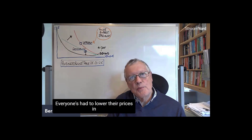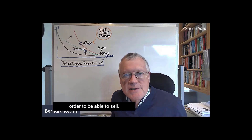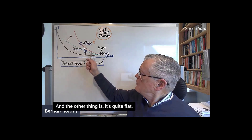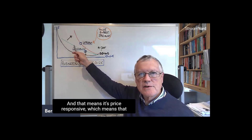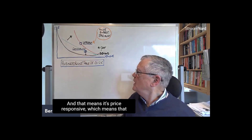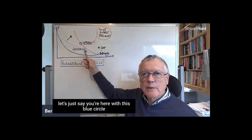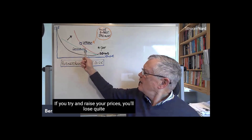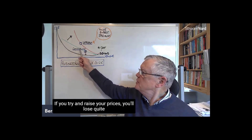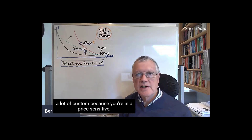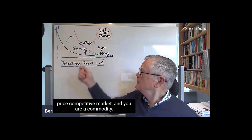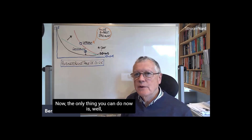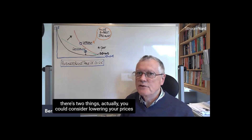Everyone's had to lower their prices in order to sell, making market prices quite low. The demand line is also quite flat, which means it's price responsive. If you're at the blue circle — producing a certain amount at a given price — and you try to raise your prices, you'll lose quite a lot of custom because you're in a price-sensitive, price-competitive market.